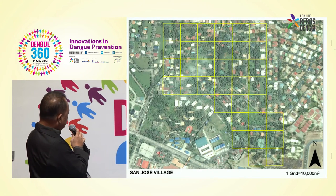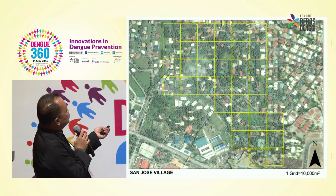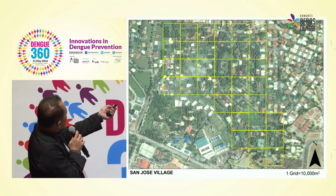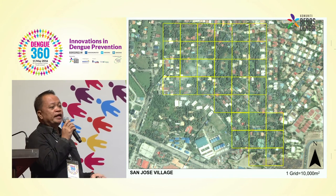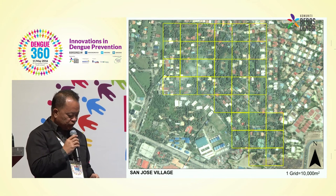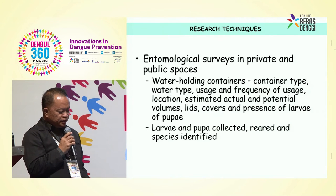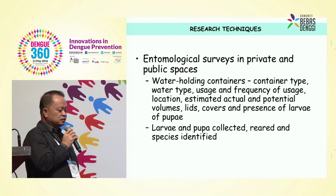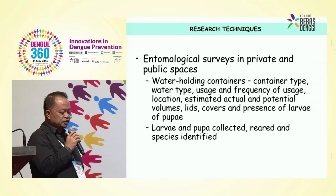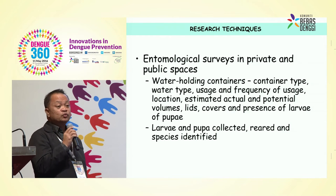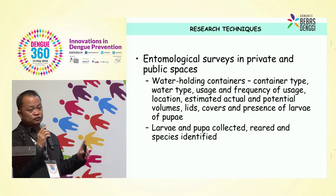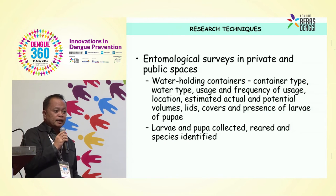We divided into grids per hectare — 100 meters by 100 meters each — and from there we continued the characterization. We did entomological surveys in private and public spaces, looking at water-holding containers. For each container type, we recorded the water type, usage, frequency of usage, its location, whether it's shaded or not, and estimated the actual and potential volumes. We looked at whether containers were covered and recorded the presence of larvae and pupae in all containers across the six communities.